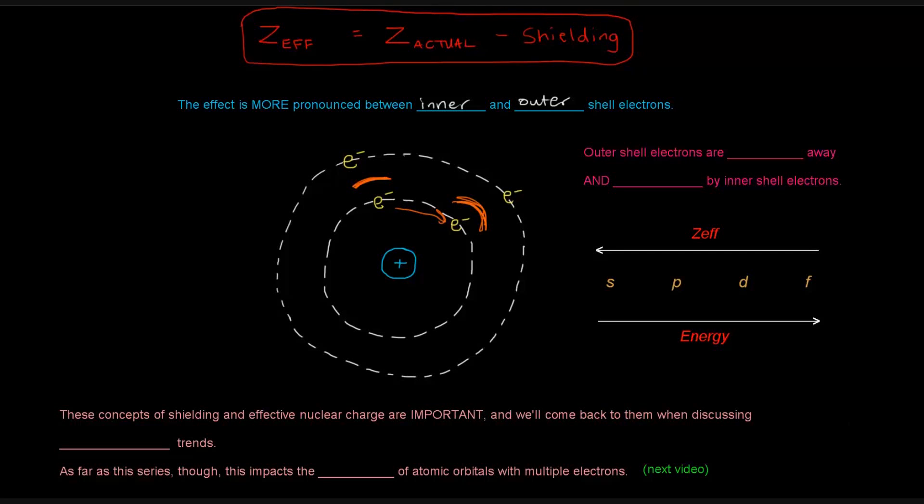So these are the outer shell electrons out here. These are the outer shell. That one there. That one there. Those are the outer shell electrons.